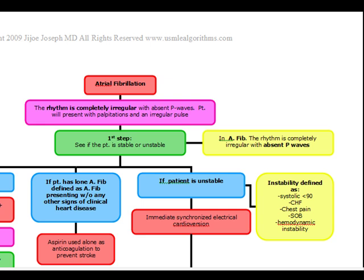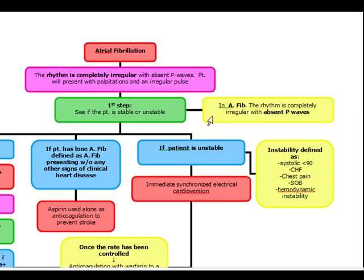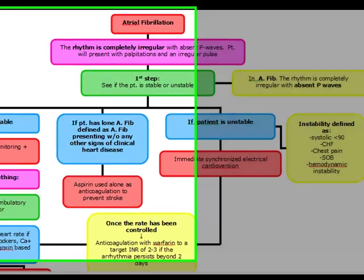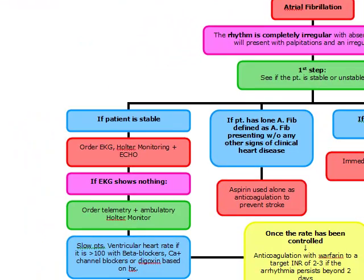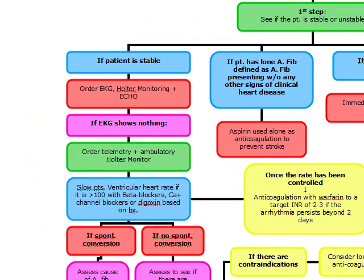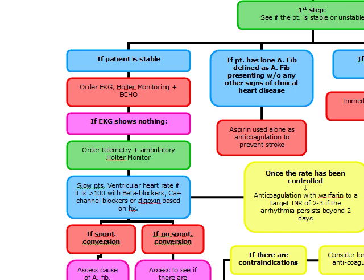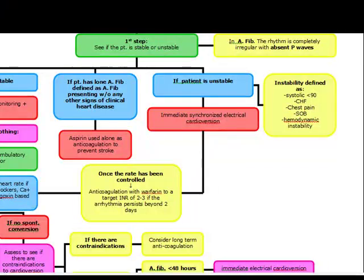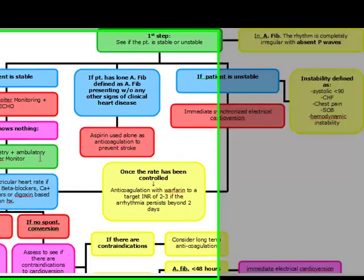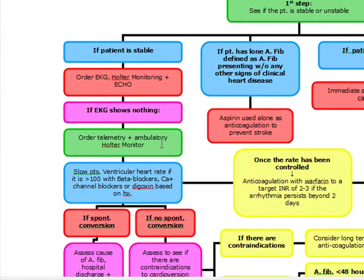Our first step is to see whether the patient is stable or unstable. If the patient is stable, we're going to order an EKG, Holter monitoring, and an echocardiogram. If the EKG shows us nothing, we're going to order telemetry plus an ambulatory Holter monitoring — this is for stable patients.